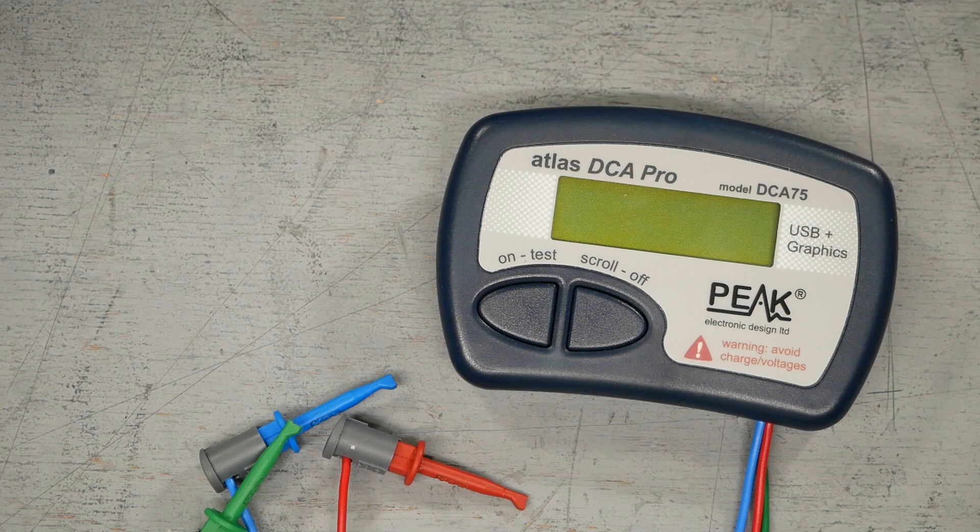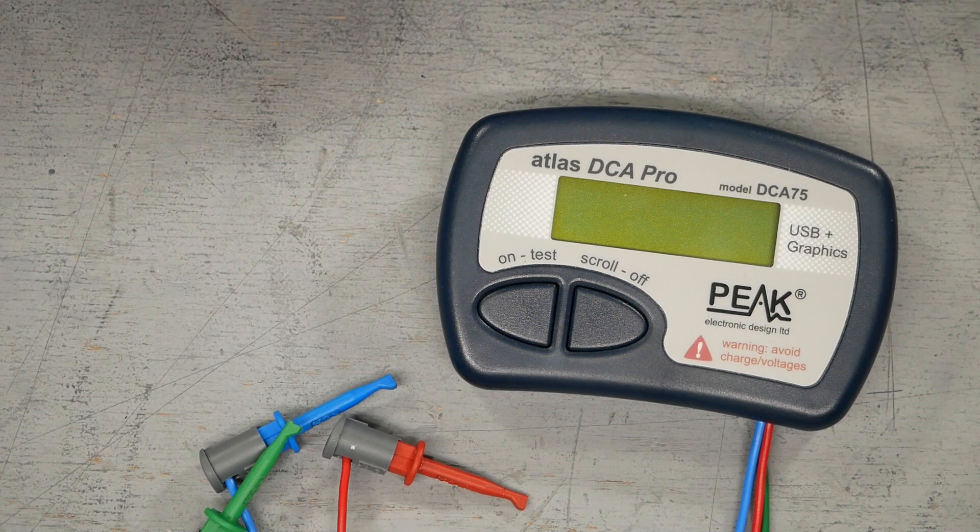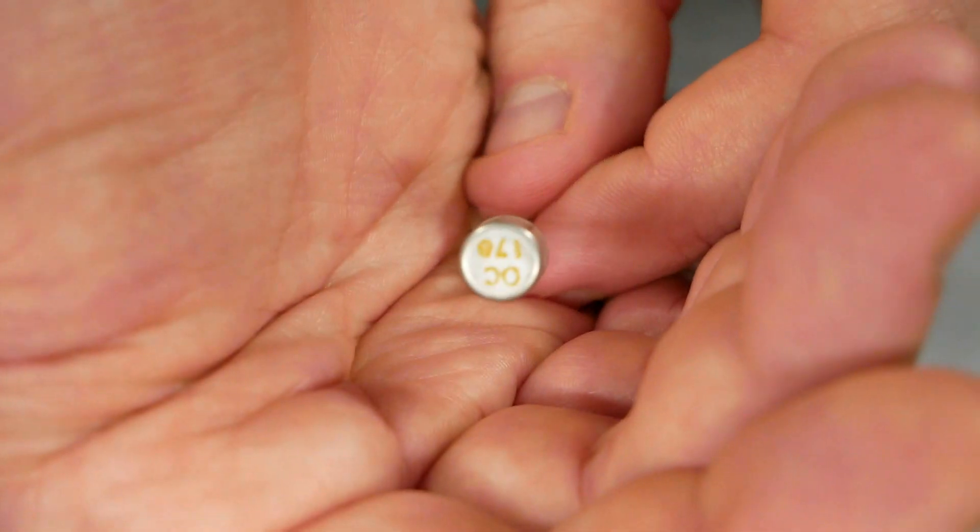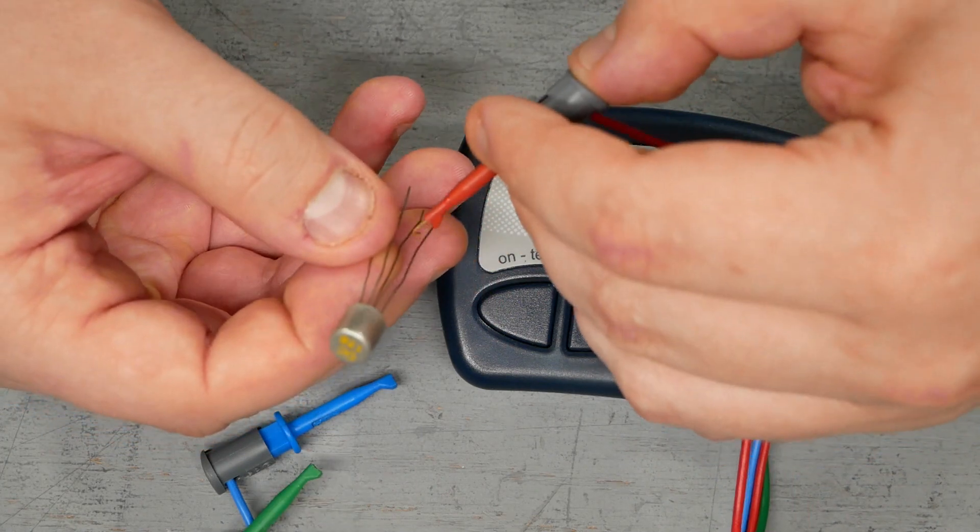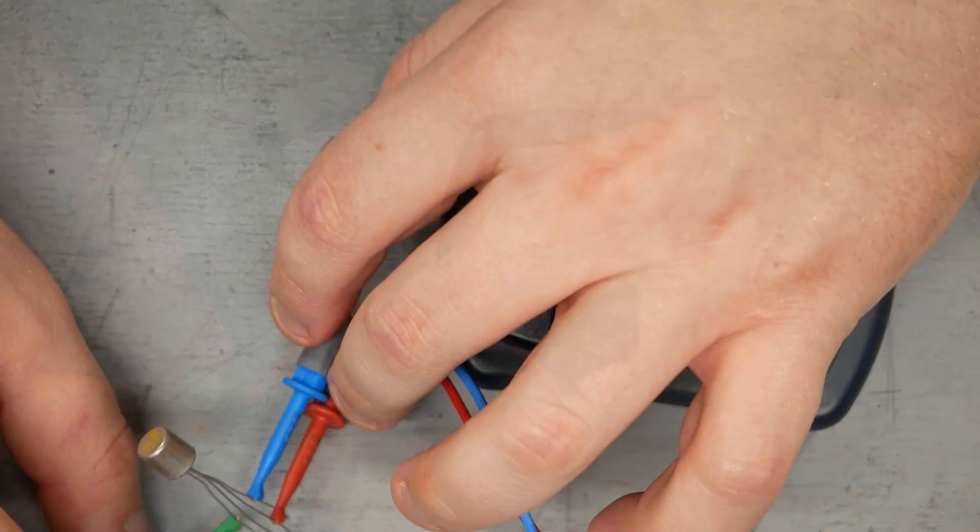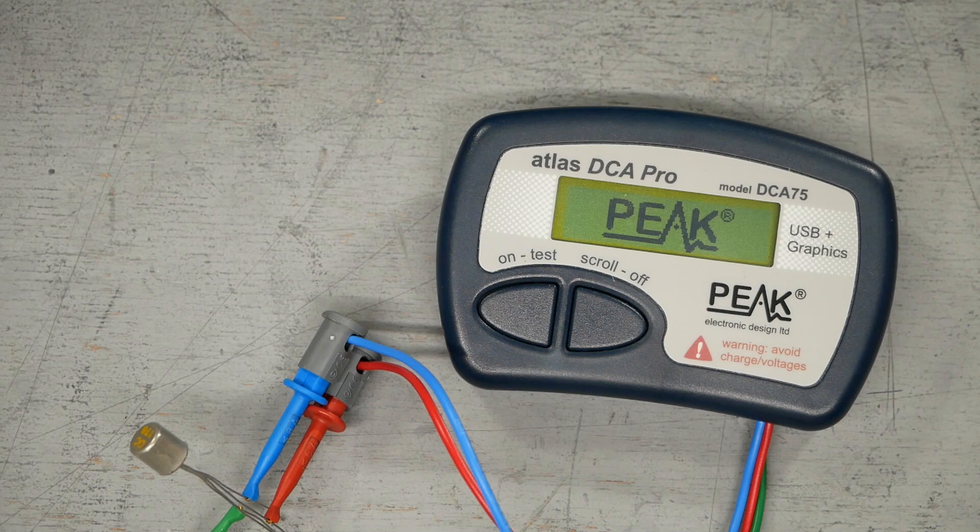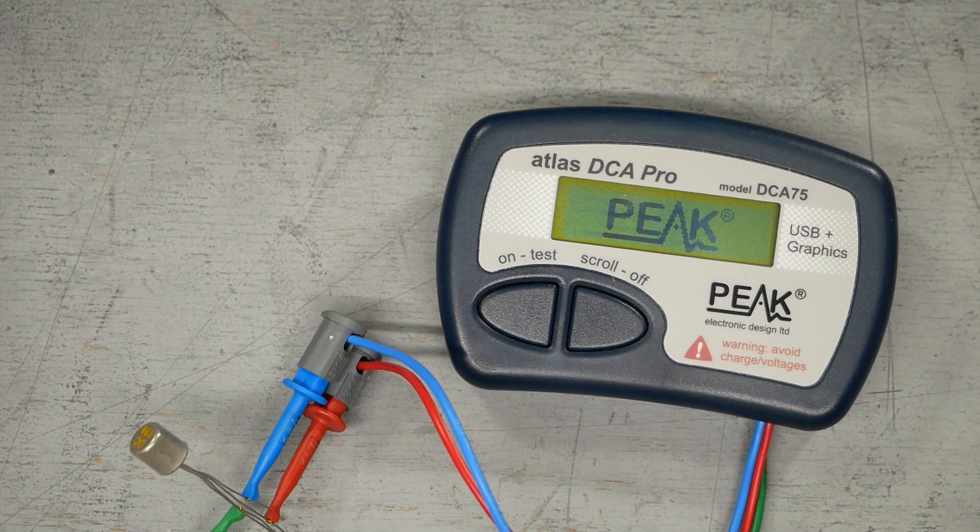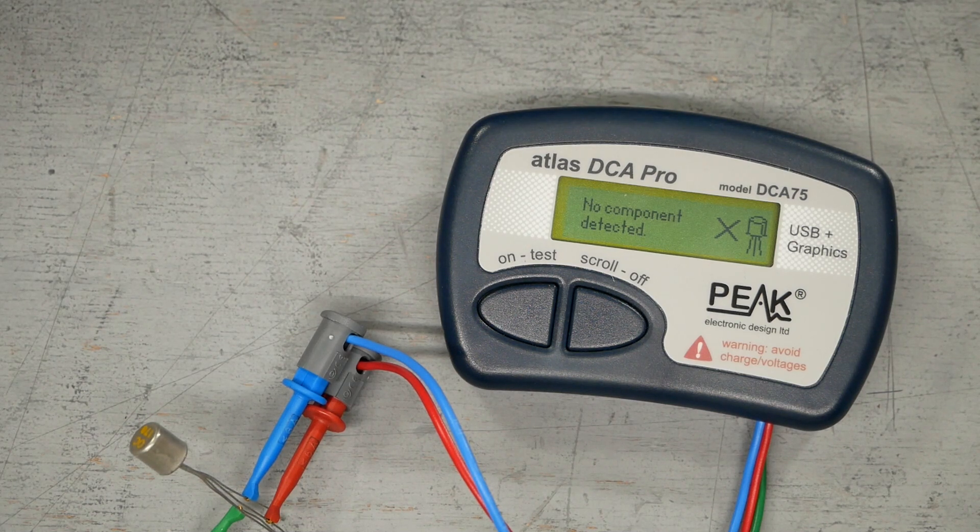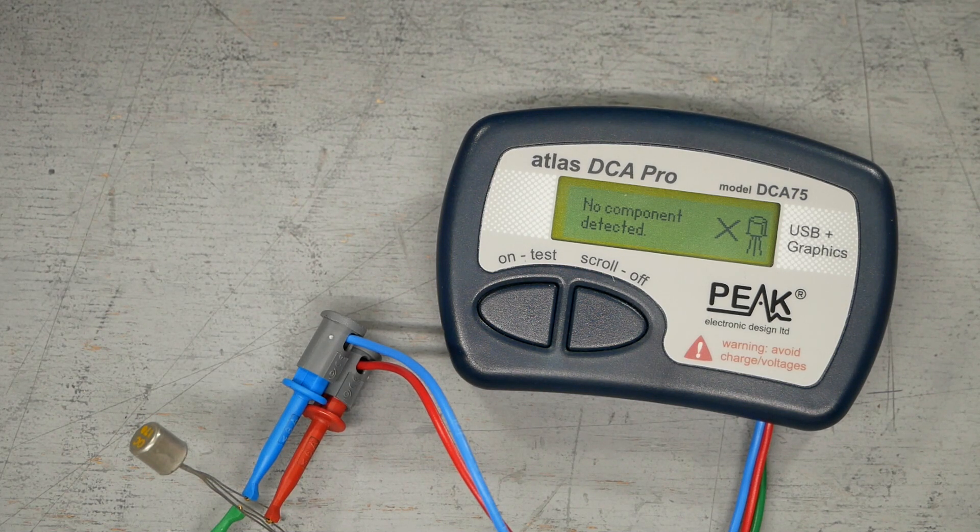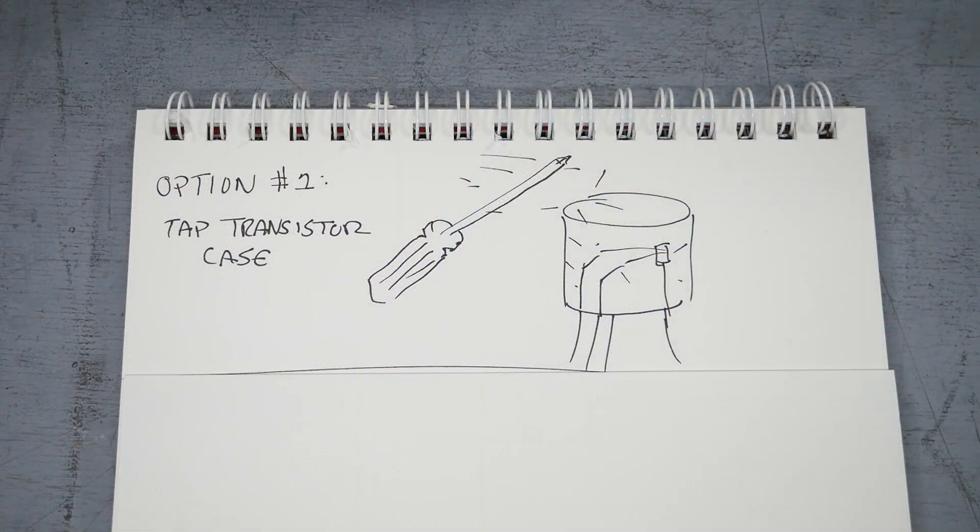We can also test with the transistor tester or semiconductor tester here. This is the peak Atlas DCA75 tried and true. We've got another one of those OC170s. Let's plug this one in and see what happens. So something's wrong in there. There's some shorts happening because the peak can't even detect it as a component or that anything's connected.